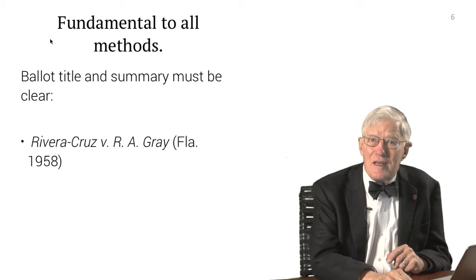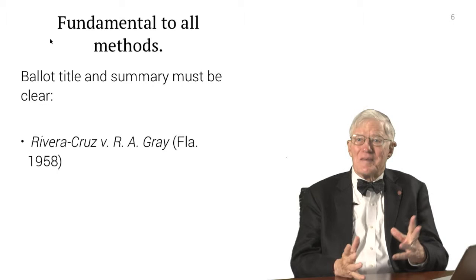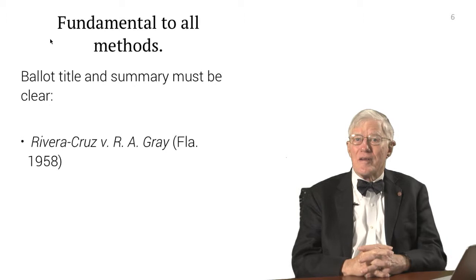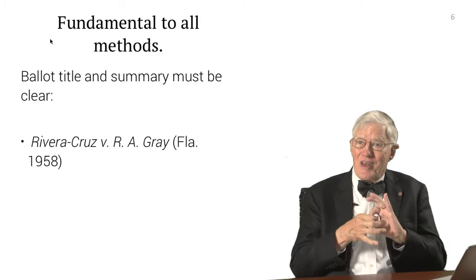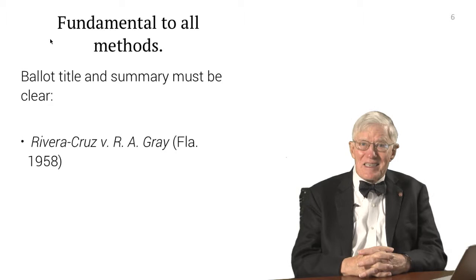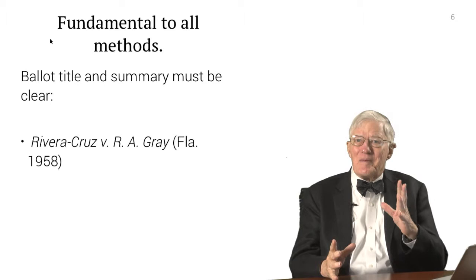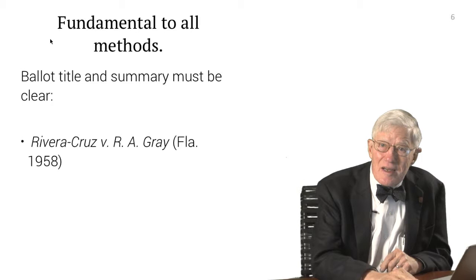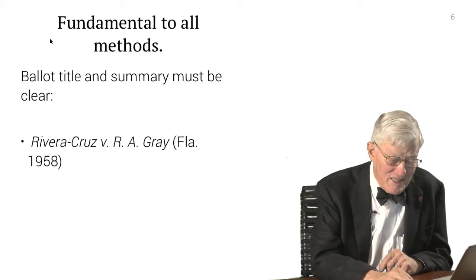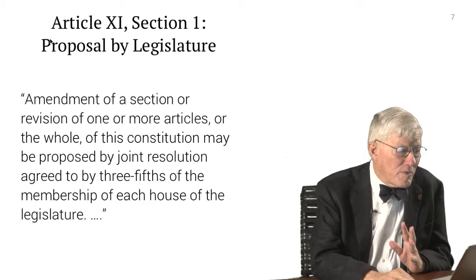Fundamental to all these methods is that the ballot title and summary must be clear. This was first announced and then followed consistently by the case we examined earlier — the Riviera Cruz versus Gray case, decided back in 1958, about the daisy chain amendment. Some clarity to the ballot title is necessary, and we now have processes that get around the daisy chain idea.